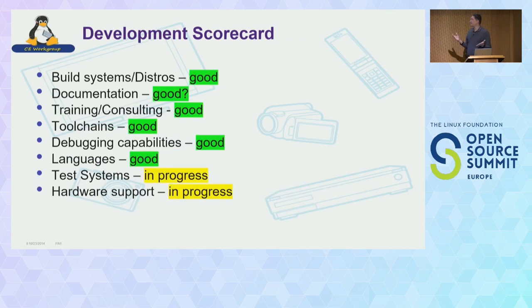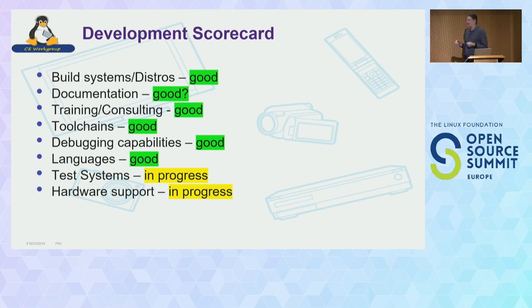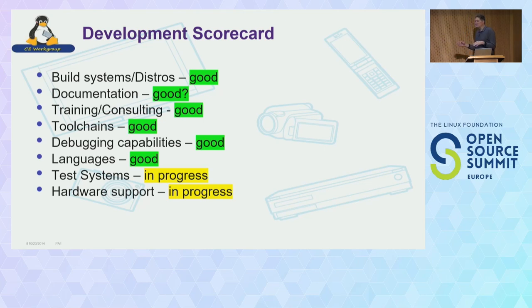This is my development scorecard. Build system distros — I think we're in pretty good shape; there are a lot of them, they're pretty powerful. Documentation — I think we could do a lot better. I found the documentation not to be that great when I started doing kernel work 20-25 years ago, and I don't think it's improved that much. Training and consulting — there are a lot of companies doing this. Tool chains — good shape. Debugging capabilities, languages, test systems — lots of work in progress. Hardware support will always be the bane of Linux — the upstreaming stuff.